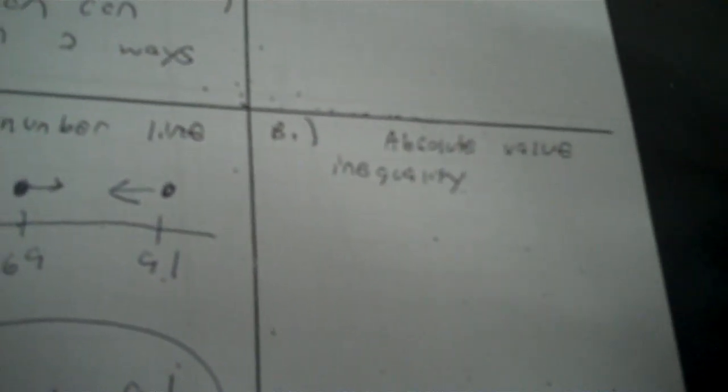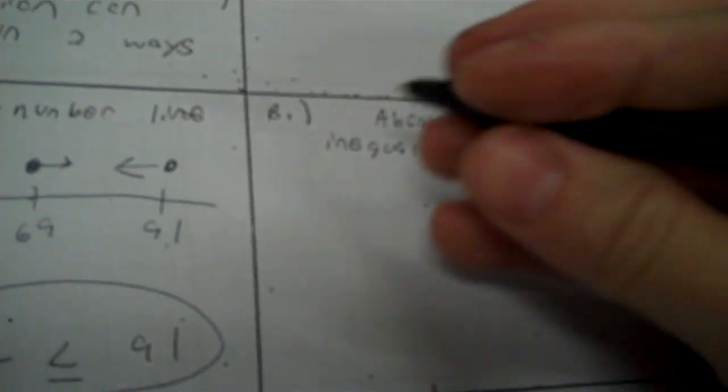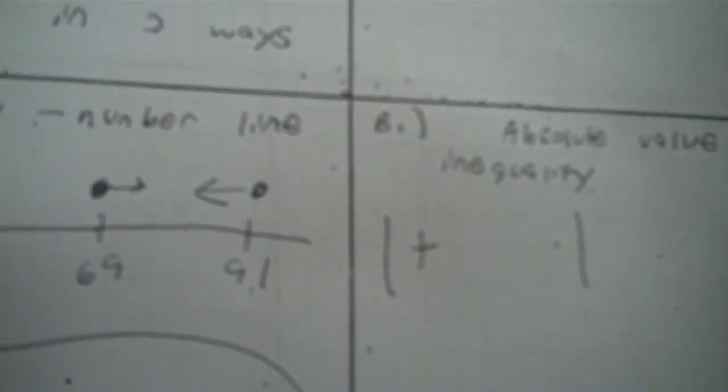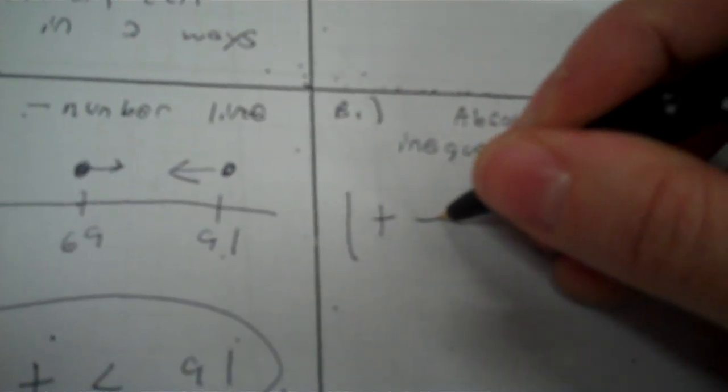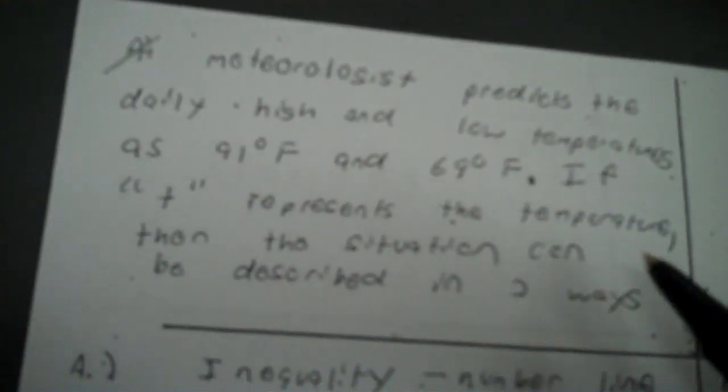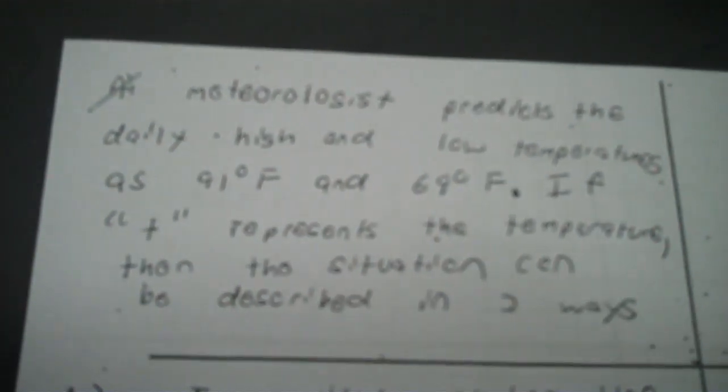Now, absolute value inequality we have not really done. Maybe I did it like one day, but the odds of anybody remembering are pretty slim. Well, you're going to make an absolute value, and you're going to put T. Now, you're going to subtract a number, but it's not either one of these. To find the number you're going to subtract, you have to find what's halfway in between those two. It's 91 and 69. That can be accomplished if you take 91 plus 69 divided by 2.